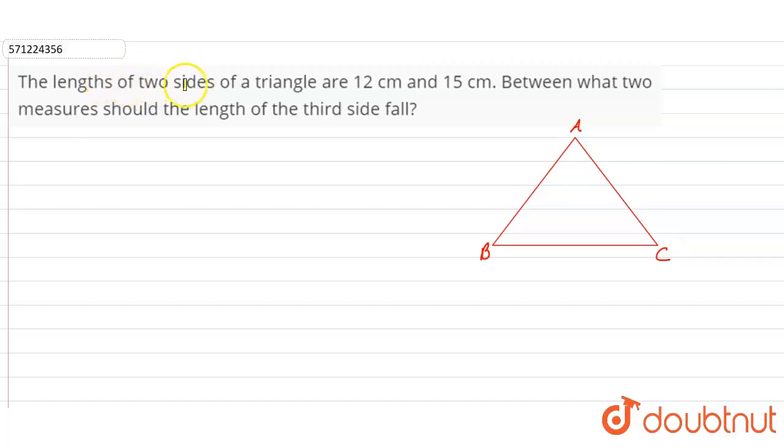The length of two sides of a triangle are 12 centimeter and 15 centimeter. Between what two measures should the length of the third side fall?